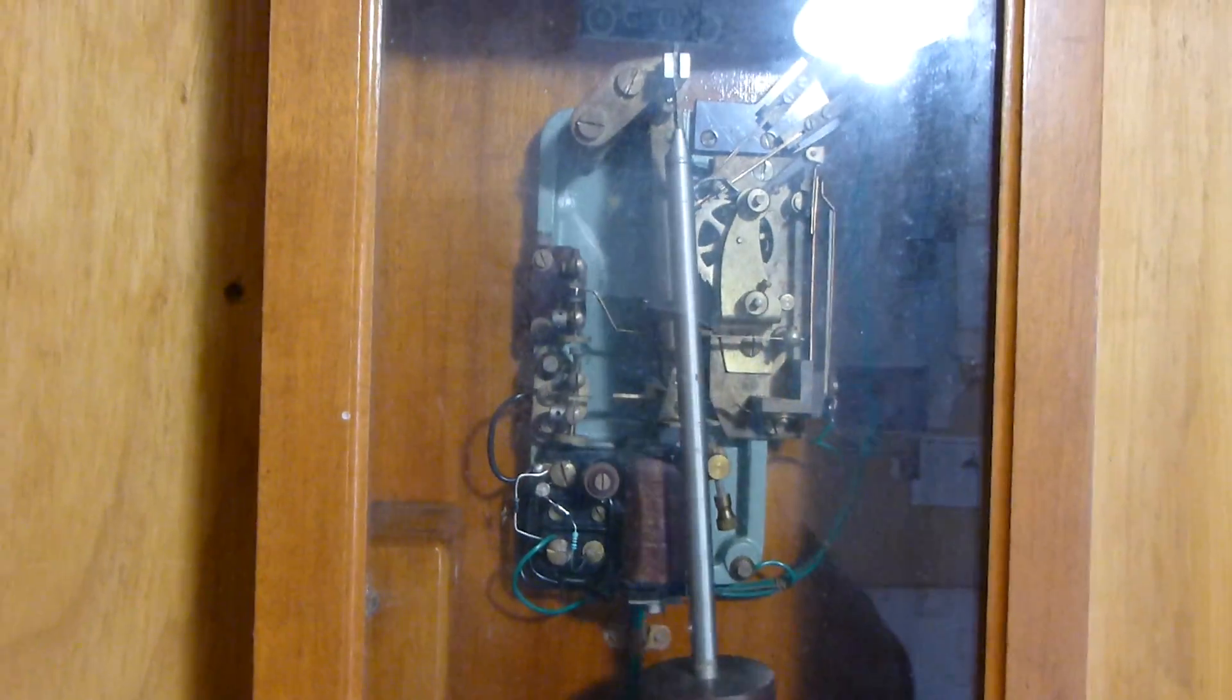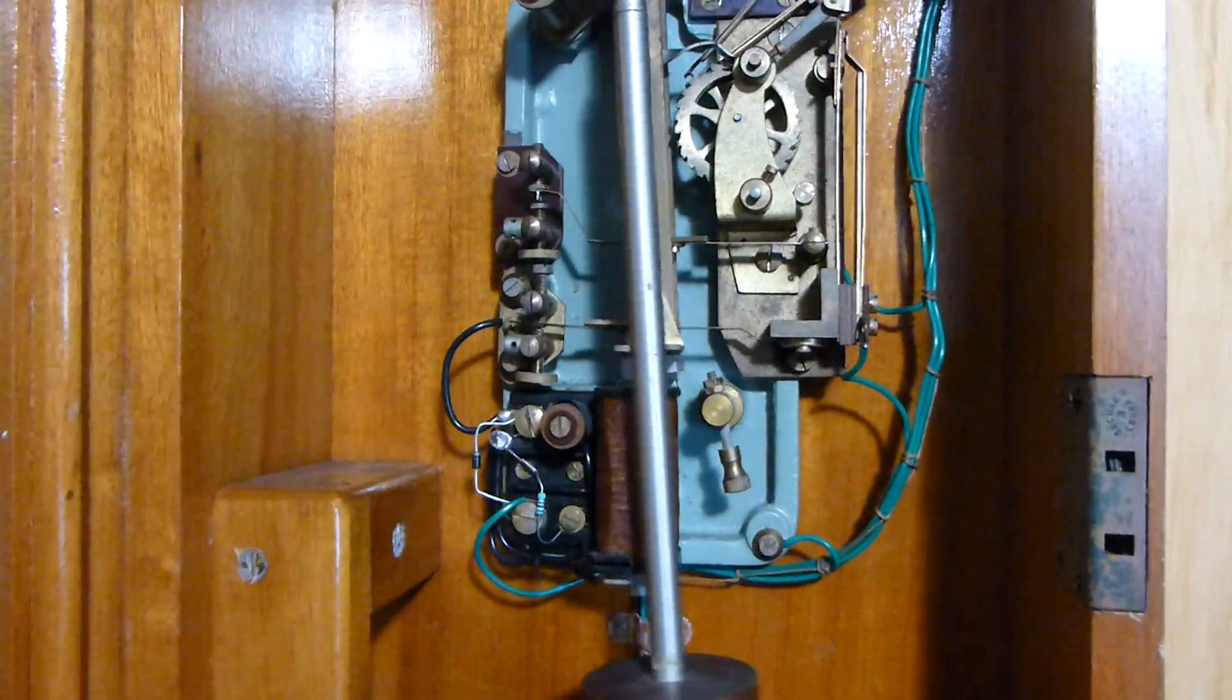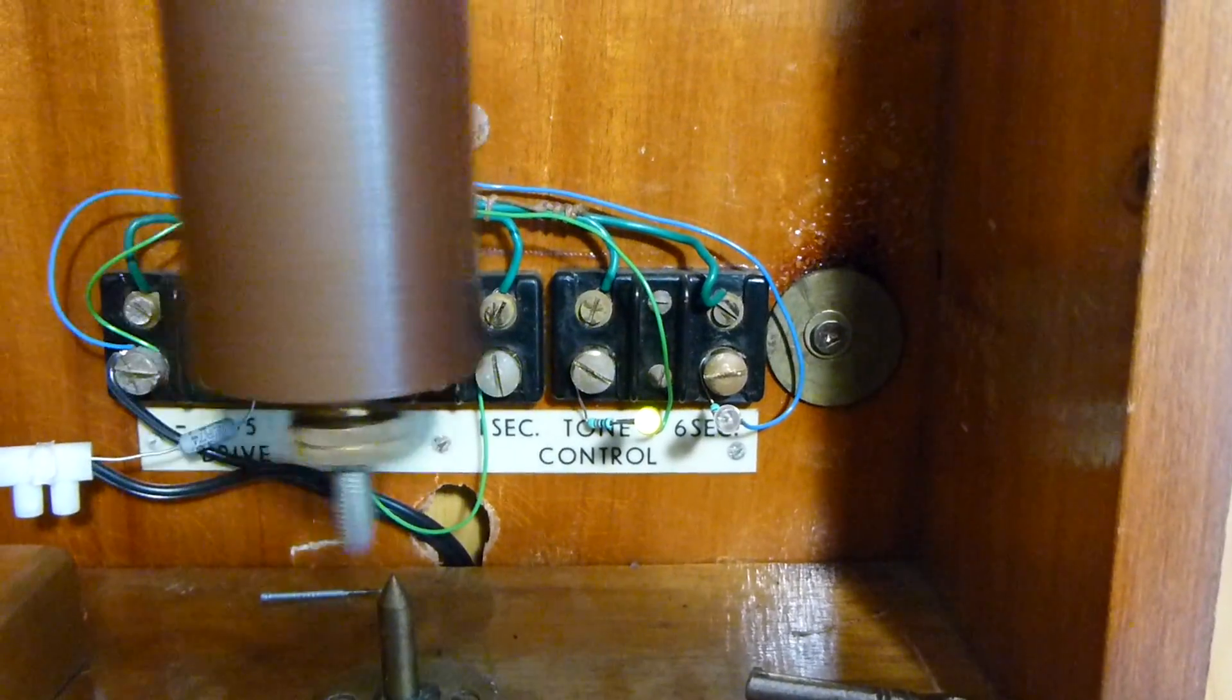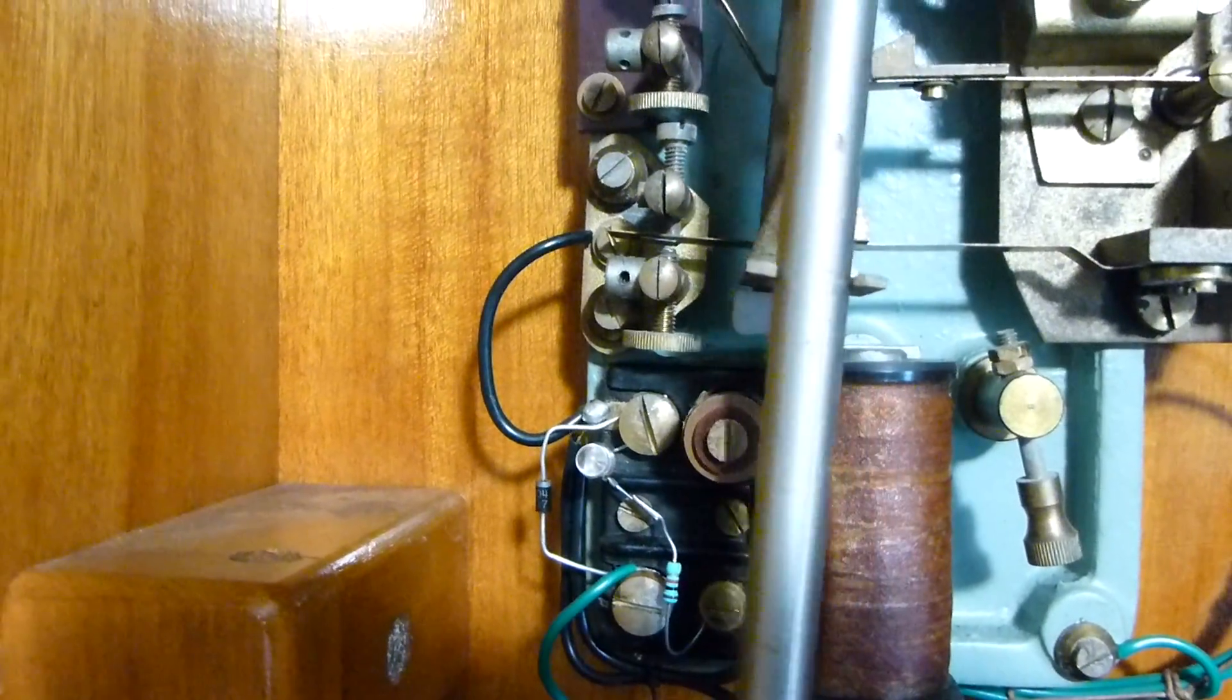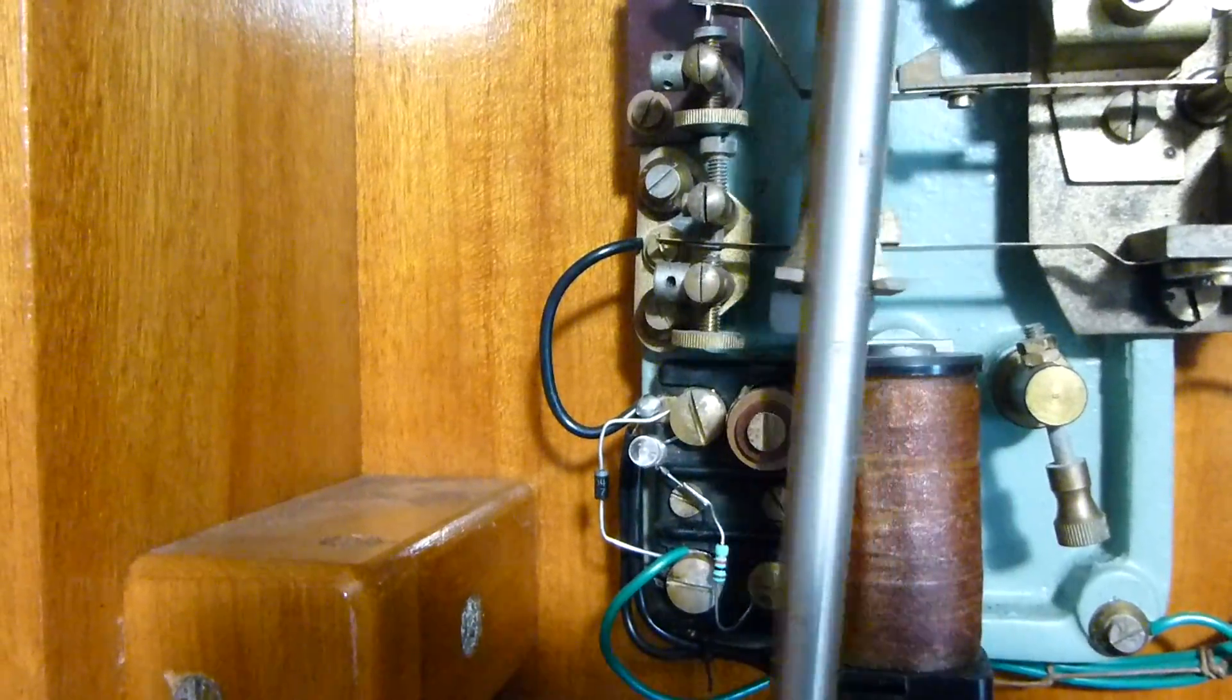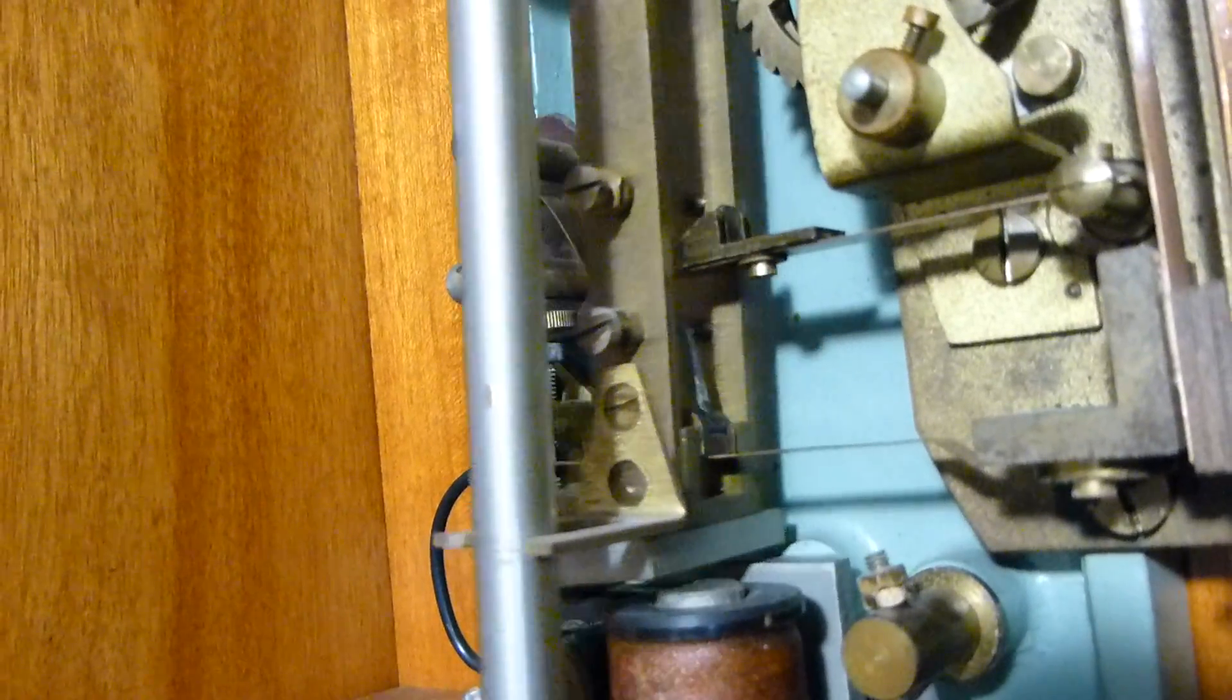This one here is also made by Gents. This is a Post Office 46. It has no face and is used purely to generate impulses, timing pulses. So I've got some LEDs down here which show two of the outputs. And I have another LED here. This is also a hip toggle clock and you can just see the toggle in behind the back of the pendulum there.